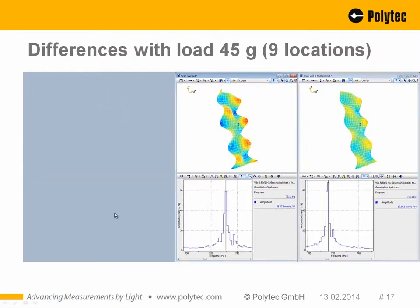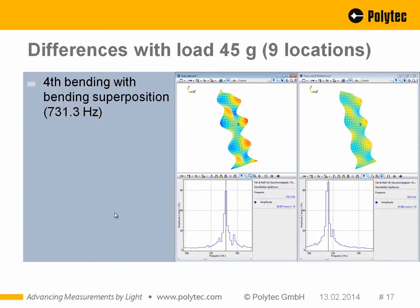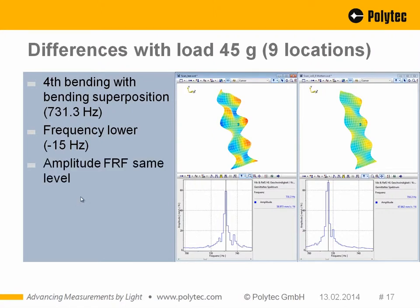At higher frequencies — around 731.3 Hz — the deflection shapes look different, but this is more a matter of amplitudes than actual shape change. For the fourth bending mode with some superposition, the frequency is now 15 Hz lower, which is significant. The amplitudes are on a similar level and the deflection shapes are still similar, so again identification of mass loading from shape alone is not straightforward — frequency shift is the clearest indicator.